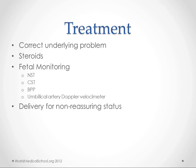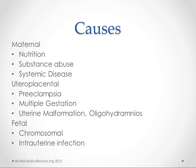Treatment usually revolves around treating the underlying problem. We make sure the mom's getting enough nutrition, tell her to stop smoking, and treat whatever systemic disease she has. For preeclampsia, there's not a whole lot we can do aside from delivery. Multiple gestation isn't something you'd want to treat. Uterine malformation we can't do much about. For oligohydramnios, we can improve fluid status, which may improve amniotic fluid levels. In some cases we can also treat intrauterine infections.